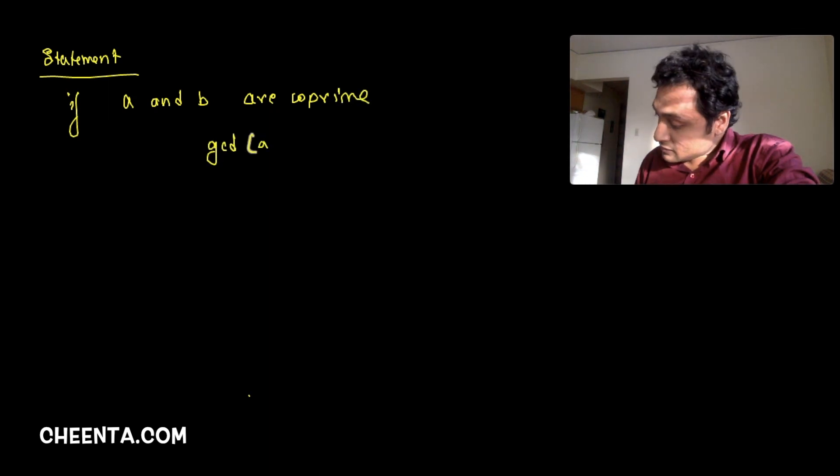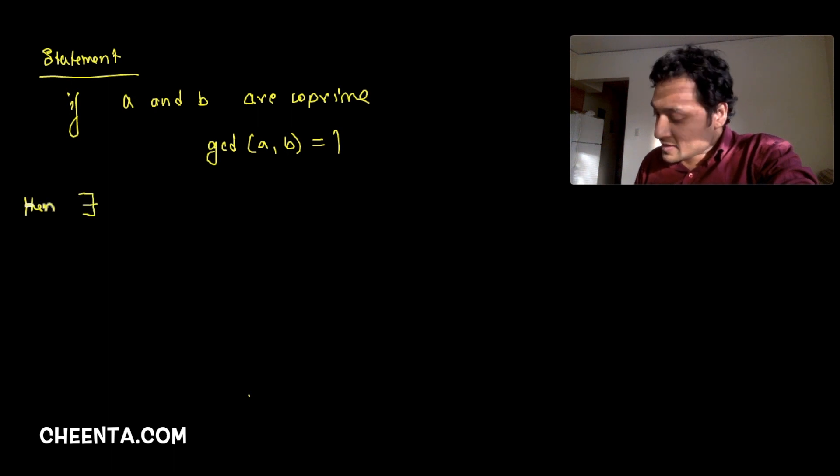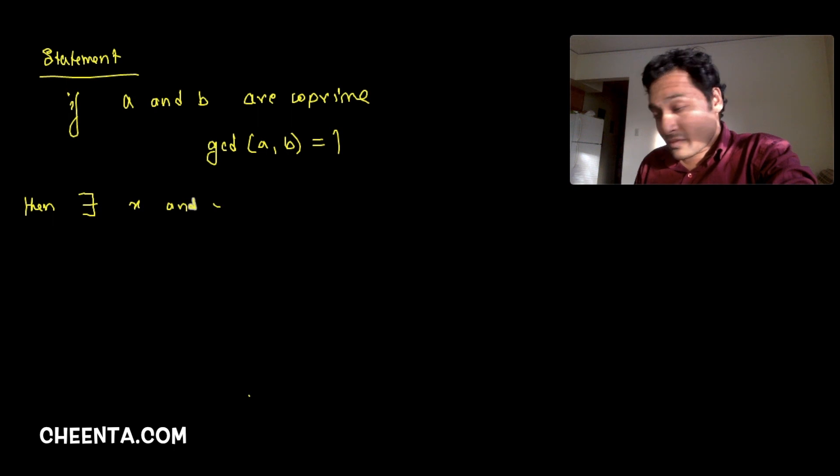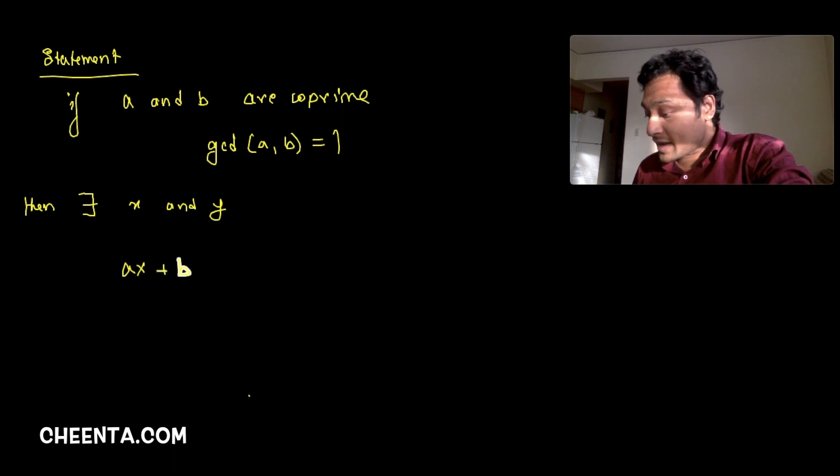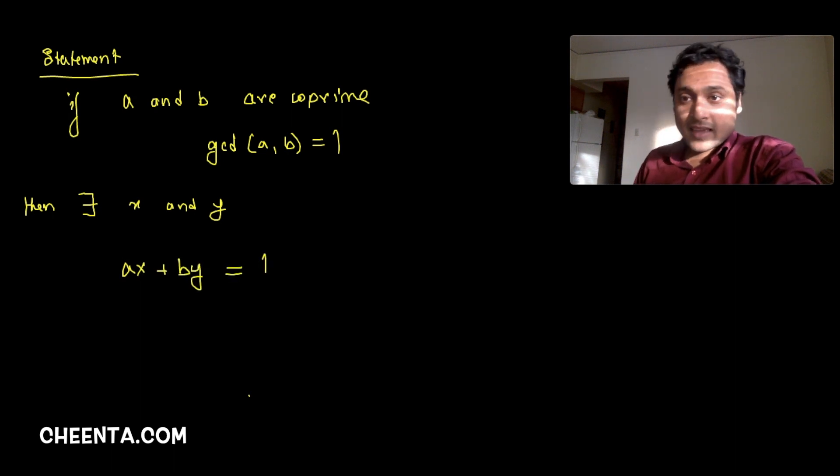Here is a quick statement of it. The statement is the following: if a and b are co-prime, that is if their GCD is one, then there exists x and y, and one of them can be negative numbers, such that ax plus by is equal to one. And remember, this is exactly what we need.